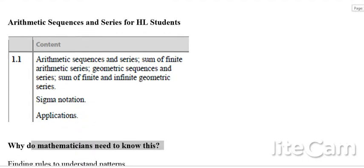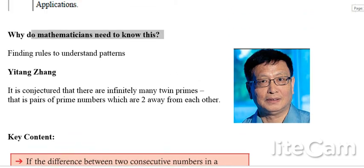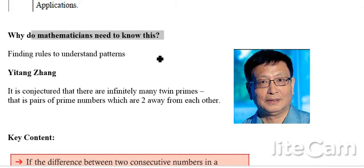The first thing to think of is why do we need to know this. I think it's worth understanding that at the heart of mathematics, mathematicians find rules to understand the patterns. This chap here, Yitang Zhang, done research recently on the twin prime conjecture—the conjecture that there's an infinite number of pairs of prime numbers which are two away from each other—and it is this kind of looking for sequences, looking for patterns, that is the actual heart of mathematics.